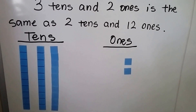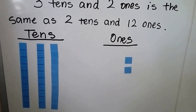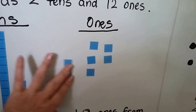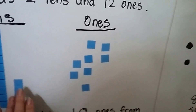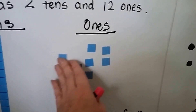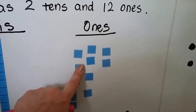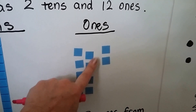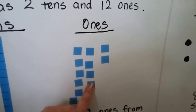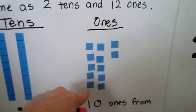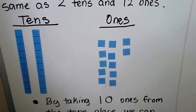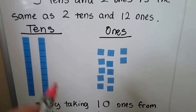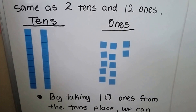3 tens and 2 ones is the same thing as — we can regroup these. We took apart one of the tens and put it here in the ones place. Now we have 10 ones and 2 ones. So the 3 tens and 2 ones is the same thing as 2 tens and 12 ones.